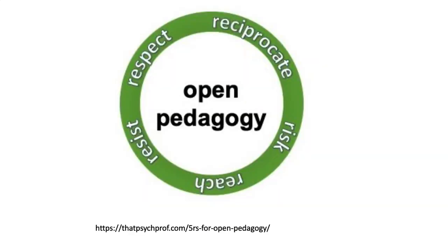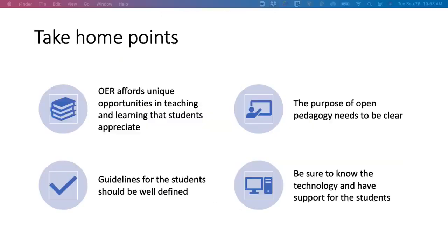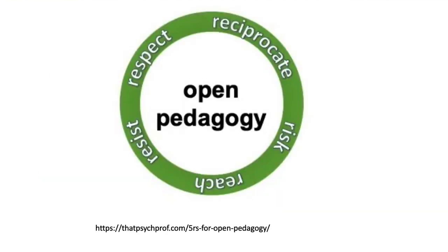Now that we have gone over the five R's of OER, I want to highlight the five R's of open pedagogy. First, respect: respect students as creators and ensure they receive attribution for their intellectual property. Second, reciprocate: be part of the open education community yourself — don't expect students to contribute something you do not contribute yourself. Third, risk: realize that public posting may make students vulnerable, as the internet is forever. Fourth, reach: learning is ongoing and goes beyond a particular class and semester when it's open. Fifth, resist: resist against commercial ideals — challenge yourself to use open education as a force for social justice.